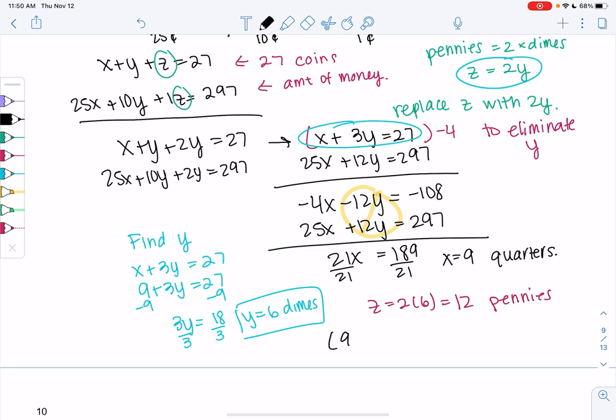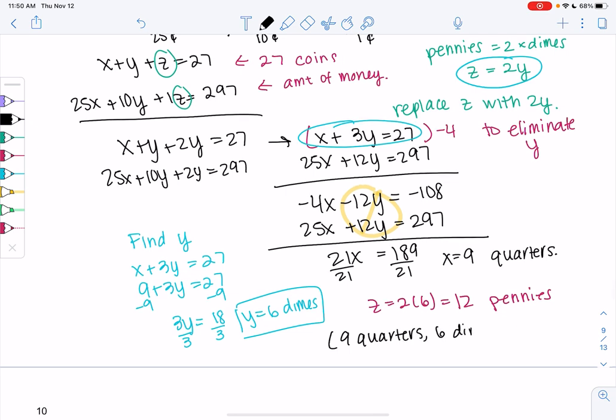6 dimes and 12 pennies. Hopefully that's 27 coins. And you can always plug in to check your work. And that's it. Word problems, I know, are intimidating. But if you can find the equations, it's nothing new. Once you have those equations, we've done this. So just be patient with organizing those equations.